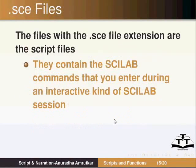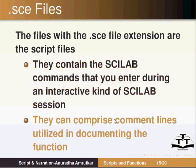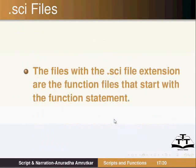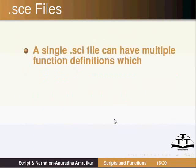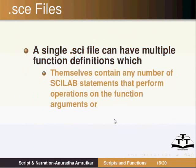Let us extend the discussion on file formats in Scilab. Scilab uses two types of file formats: the .sce file format and the .sci file format. Files with the .sce extension are script files which contain the Scilab commands entered during an interactive Scilab session. They can comprise comment lines used in documenting the function, and they can also use the exec command to execute the script. Files with the .sci extension are function files that start with the function statement. A single .sci file can have multiple function definitions which contain any number of Scilab statements that perform operations on the function arguments or on the output variables.